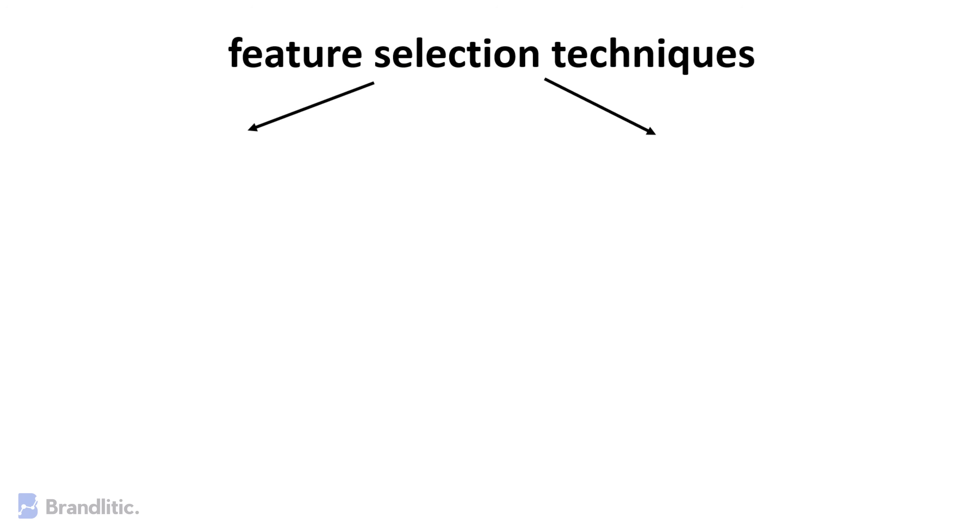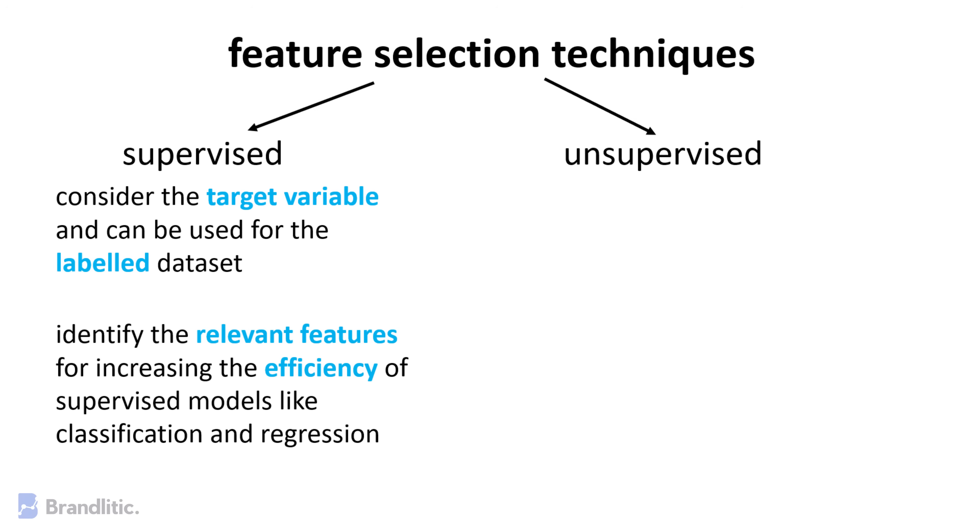The techniques for feature selection in machine learning can be broadly classified into supervised and unsupervised. Supervised techniques are those that consider the target variable and can be used for the labeled dataset. They identify relevant features for increasing the efficiency of supervised models like classification and regression.